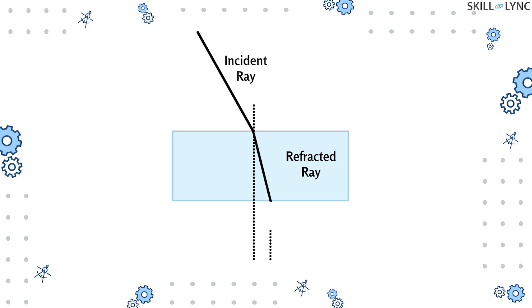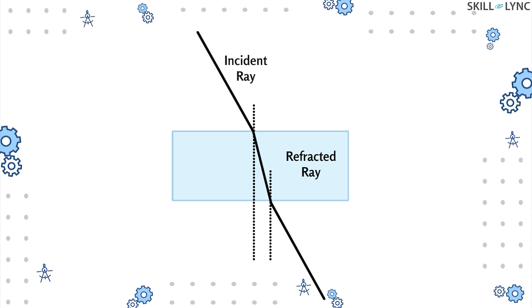Here we will observe that the ray that passes through the surface has bent towards the normal. Now when this ray of light further passes from water to air, this time we will observe that the ray of light has bent away from the normal.